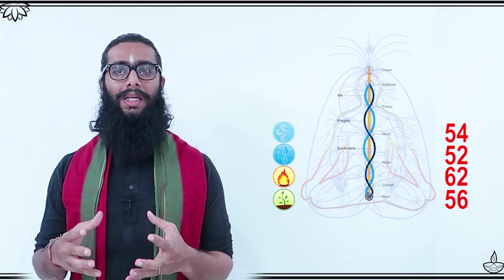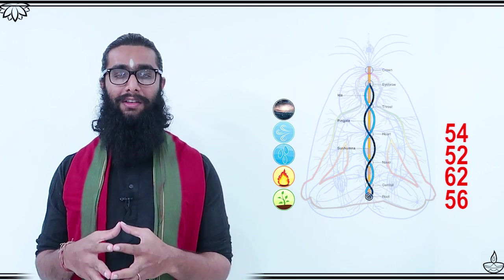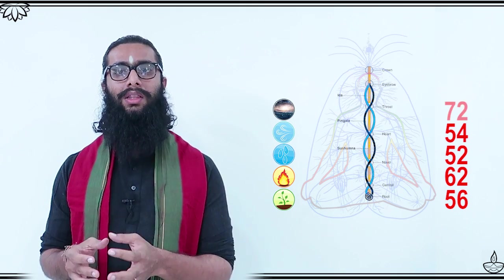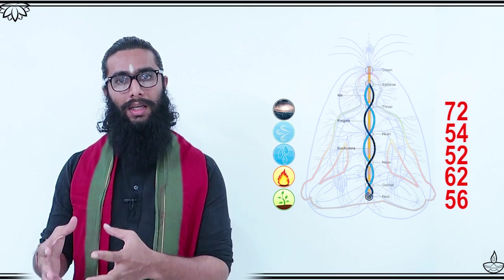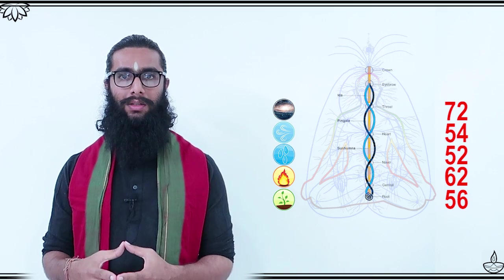In vishuddhi chakra, which means in the space element, in divi, there are dvishat trimshan, or two times 36, which is 72 rays.